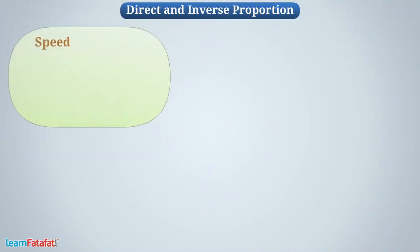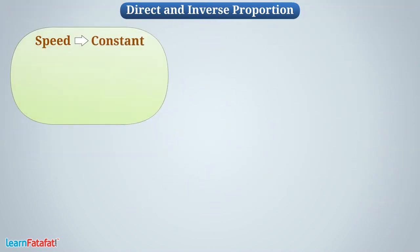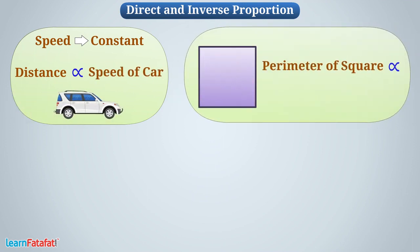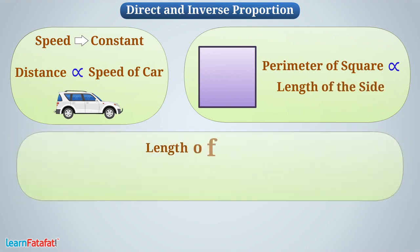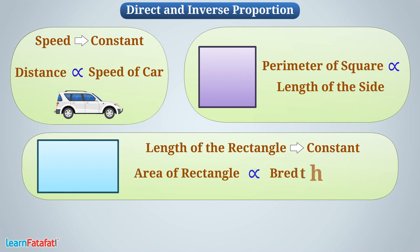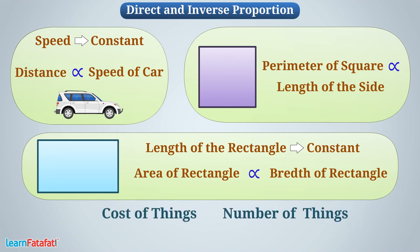Let me tell you: when speed is constant, the distance is directly proportional to the speed of the car. The perimeter of a square is directly proportional to the length of the side. Similarly, if the length of the rectangle is constant, its area is directly proportional to the breadth of the rectangle. Can we say the cost of things and number of things are in direct proportion? Discuss this with your friends.